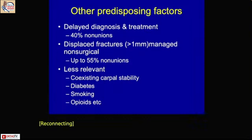Among the predisposing factors, it has been shown that most scaphoid fractures — around 80 to 90% — unite well with conservative treatment. So we have only 5 to 10% of patients who develop scaphoid non-union and require further treatment.